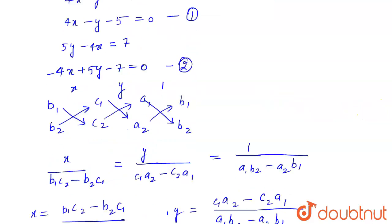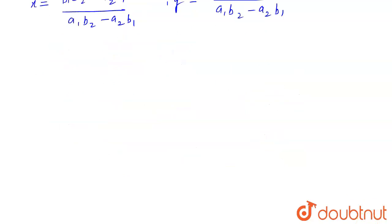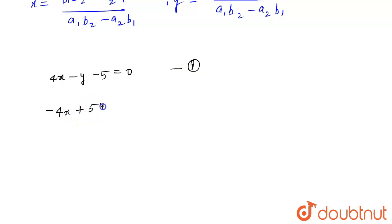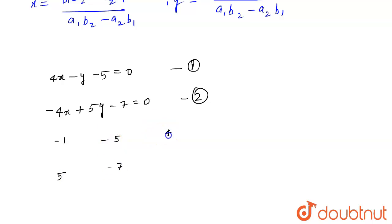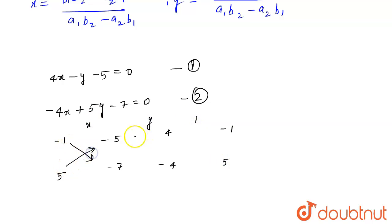We apply this same method to the equations we rearranged. Equation 1 is 4x minus y minus 5 equals 0, and equation 2 is minus 4x plus 5y minus 7 equals 0. We write the corresponding coefficients: for x: 4, minus 4; for y: minus 1, 5; and constants: minus 5, minus 7.